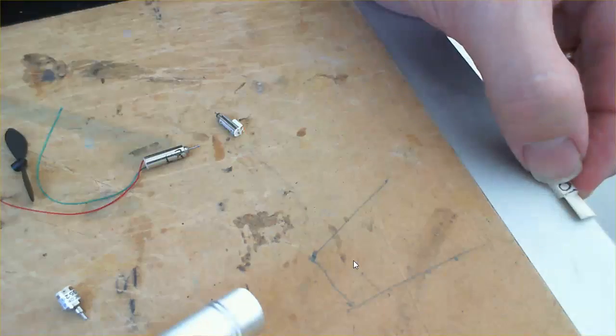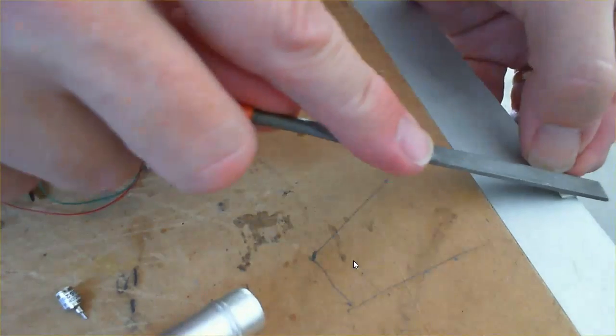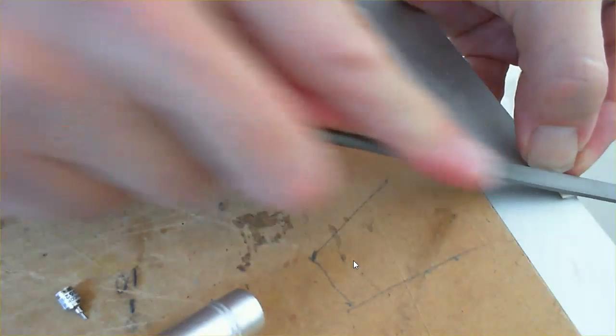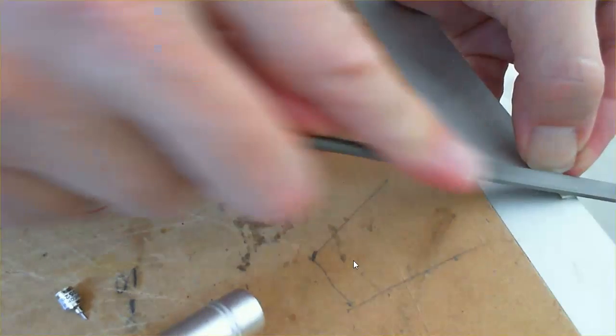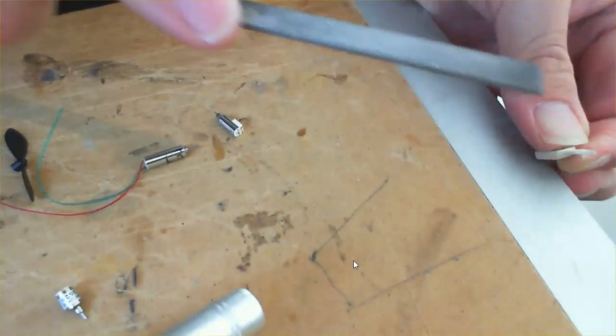We'll go back to this one. So this is the back surface. It needs to be nice and flat. I'm just going to flatten that off, trying to keep the file at an exact angle.